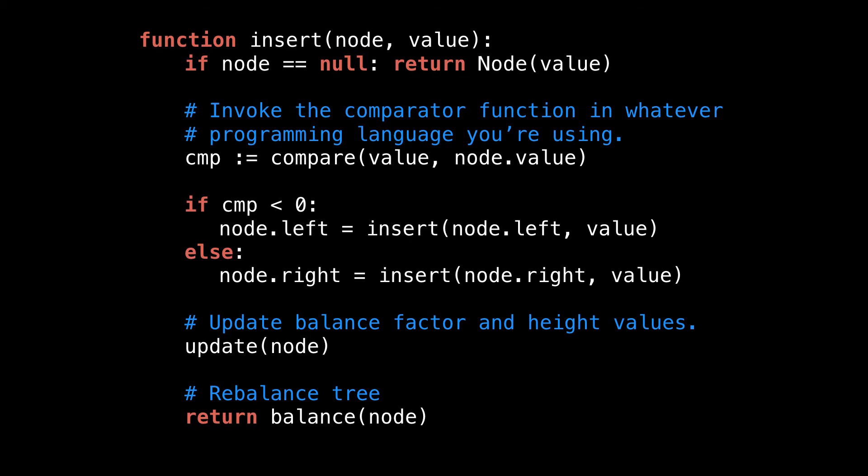After that, on the recursive callback, we call the update method, which updates the balance factor and height values for this node. And lastly, we rebalance the tree with a balance method. Now, let's take a look at the update and balance method and what they're actually doing.